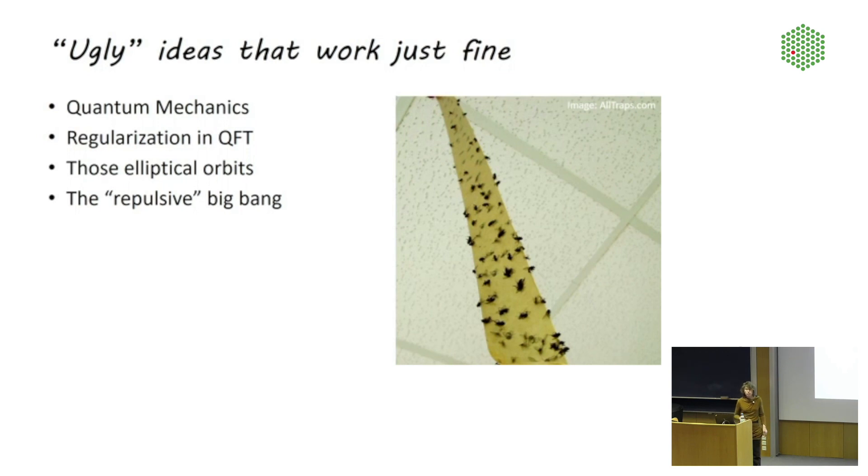Then in quantum field theory, we have a mathematical procedure that's called regularization that a lot of people, especially Dirac, consider to be very ugly. What's happening there is that a lot of the time, if you try to calculate what happens in a measurement, the answer that you get from the theory is actually infinity, which is not very useful. So then you have to jump through some hoops to get rid of that infinite part and find the physically meaningful finite remainder. And that is called regularization. Works just fine, predicts observations very well, but a lot of people think that it is very inelegant. Then there are, I already said this, the elliptical orbits that were considered to be ugly and the Big Bang theory.